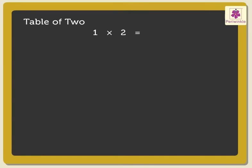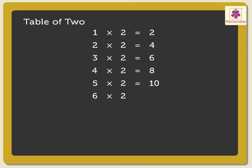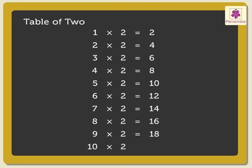Next is the table of 2. 1 two is 2. 2 twos are 4. 3 twos are 6. 4 twos are 8. 5 twos are 10. 6 twos are 12. 7 twos are 14. 8 twos are 16. 9 twos are 18. 10 twos are 20.